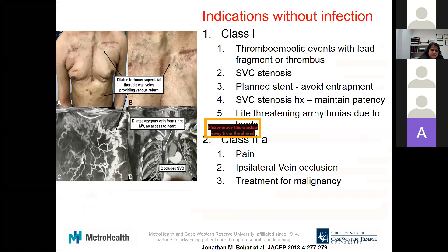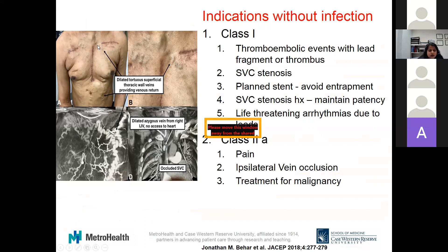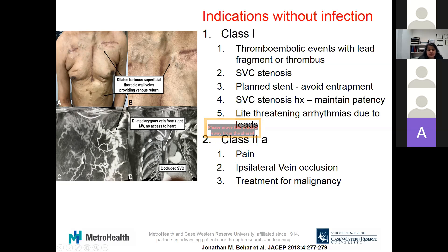This picture shows a patient with immunocompromised status who had multiple device infections, implantations, and removals for a BiV device, eventually developing bilateral SVC occlusion. They presented in a VT storm with a device at end-of-life that was also infected. When the device was removed, it could not be replaced due to bilateral SVC occlusion. You can see extensive collaterals — dilated azygous veins and tortuous skin vessels — ultimately requiring epicardial BiV system placement. This illustrates why SVC patency is mentioned multiple times in the guidelines.